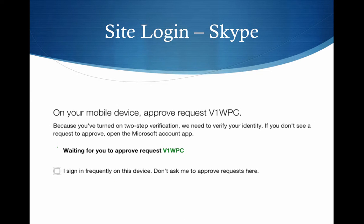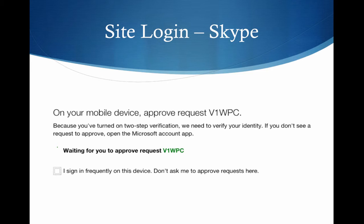This next step is going to involve you already having the Microsoft two-factor client installed, and we've covered that in a previous video. You'll see where this request talks about V1 WPC. You will see a pop-up from the Microsoft account show up on your smart device, and you can approve the process from there, and then you'll go ahead and be logged in. I would encourage you on the sign-in frequency from this device to not have that checked, just on the off chance that somebody does happen to use your computer. It does protect you from them getting in, or if you're using a computer that is not normally yours or one that's at work, this provides an additional layer of protection.